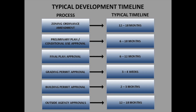The Typical Development Timeline includes a variety of processes. Below you will see the process and the associated timeline. These are all approximations and depend on the complexity of the project. For a Zoning Ordinance Amendment, the typical timeline would be 12 to 18 months. For Preliminary Plan or Conditional Use Approval, the timeline could range from 6 to 18 months. For Final Plan Approval, the typical timeline is 6 to 12 months. Grading Permit Approval, 3 to 4 weeks. Building Permit Approval, 2 to 3 months. And for Outside Agency Approvals, 12 to 18 months.